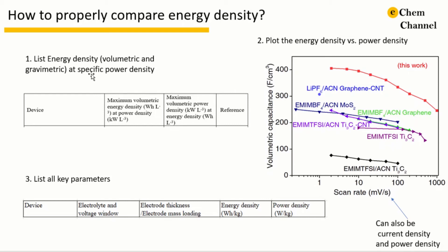In this case, there are several suggested ways. The first way is to list the maximum energy density and maximum power density. Maximum energy density is usually achieved with a small current density, and maximum power density is reached with a large current density. Reporting in this way will certainly show the limitation of the device. The second way is to plot the energy density as a function of scan rate, current density, or power density. This certainly gives more instinctive comparison than the first method.